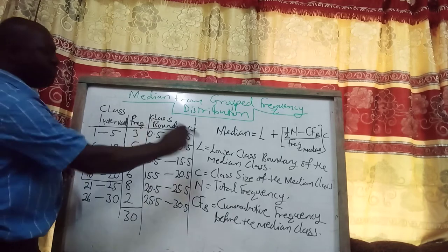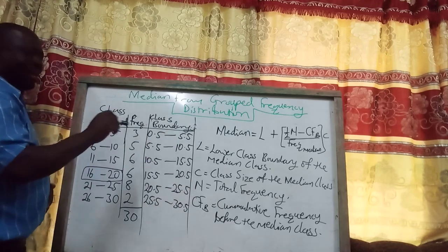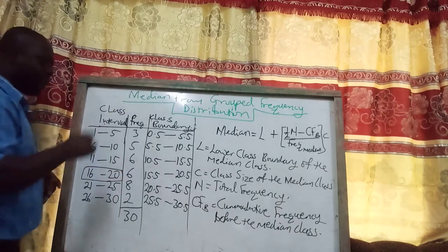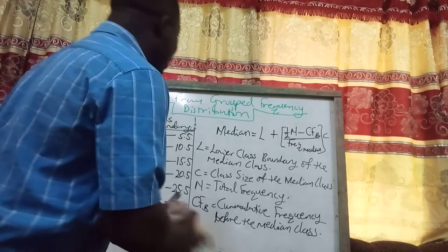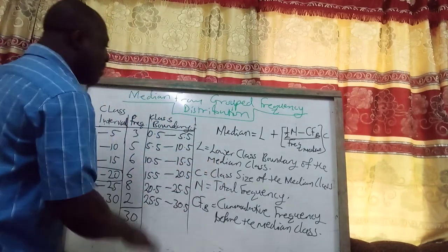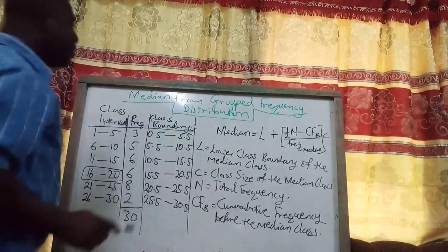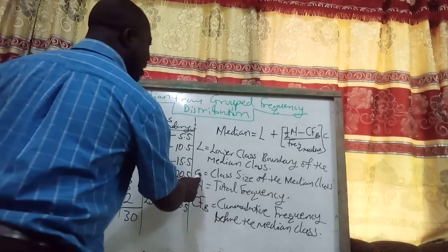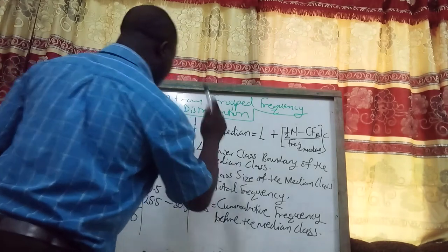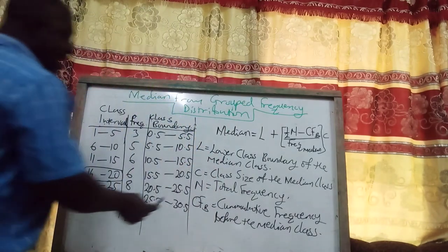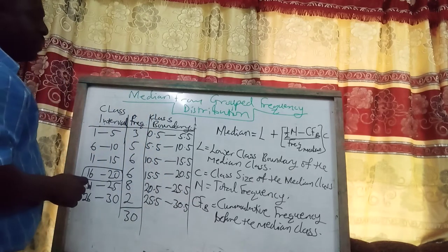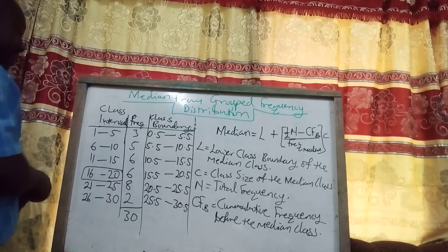The lower class boundary L for the median class 16 to 20 is 15.5. C is the class size of the median class. N is the total frequency, which is 30. CF_before is the cumulative frequency before the median class, which we can read from the table.